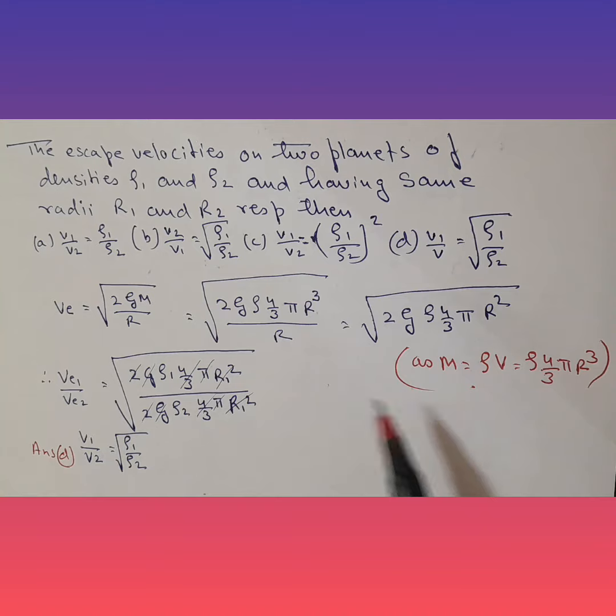Now mass can also be written as ρV, where volume, since it's a sphere, is 4/3πr³. So ρ × 4/3πr³ is mass.